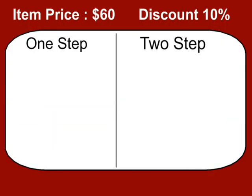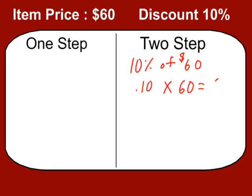So why don't we practice this? Let's say there's an item for $60 and there's a 10% discount. I'm going to do the two-step first. So you're saving 10% of the $60. 'Of' means multiply — we're going to convert the percent to a decimal, which is 0.1 or 0.10, times 60. When you do that, you get 6. So we're saving $6. That's step one.